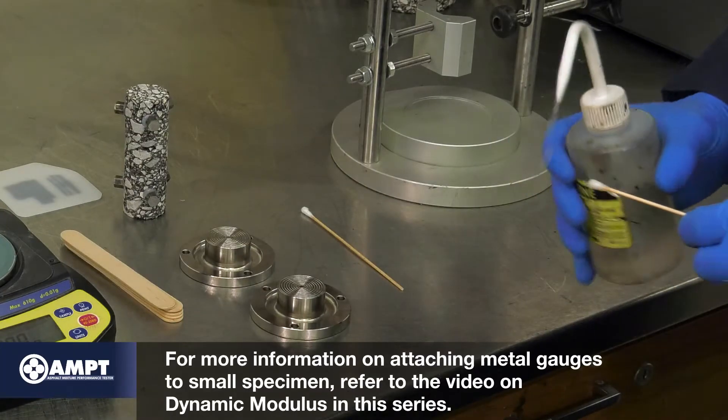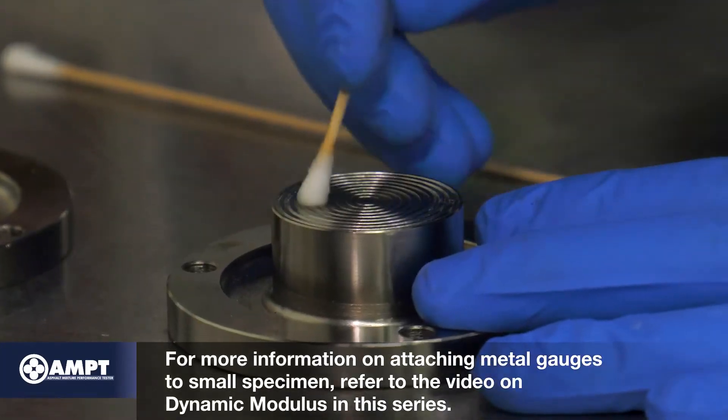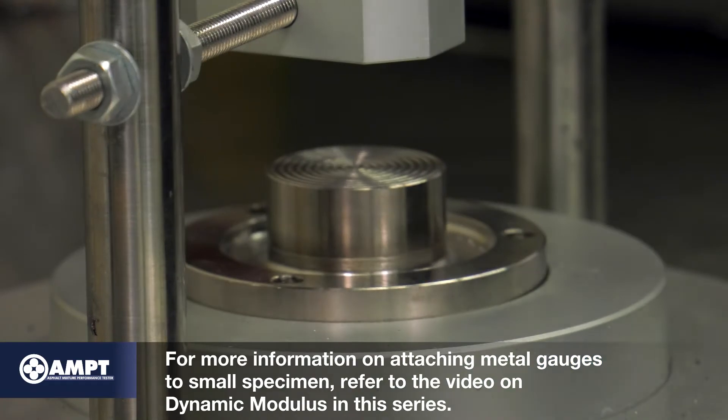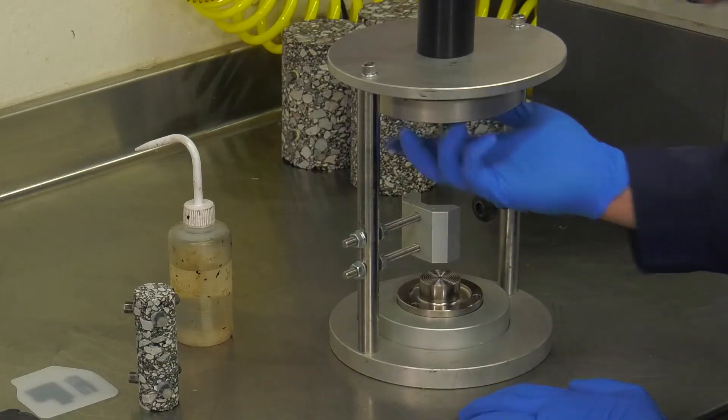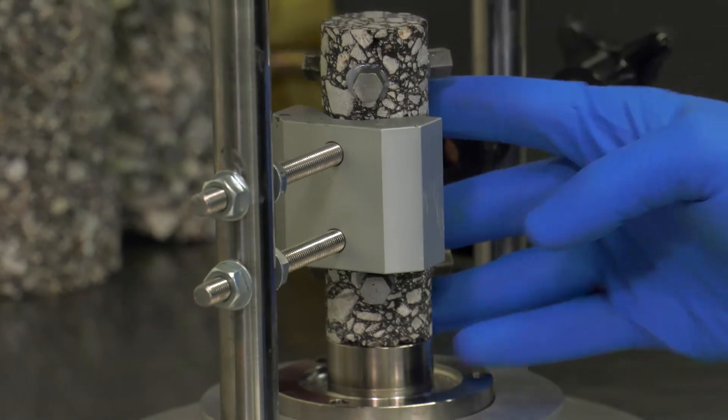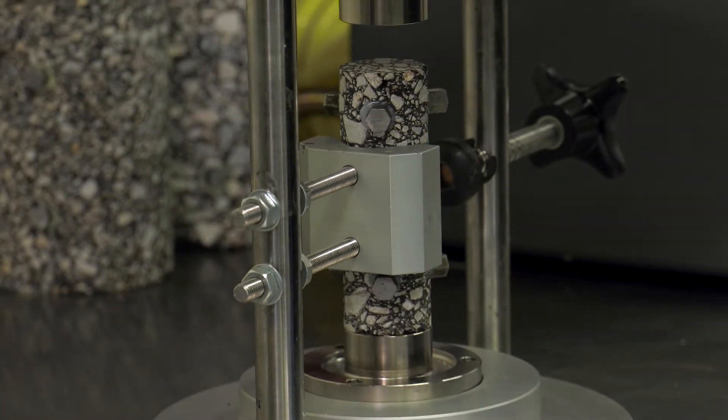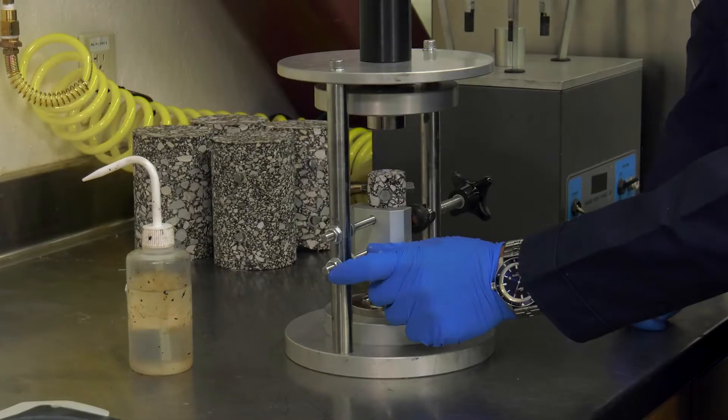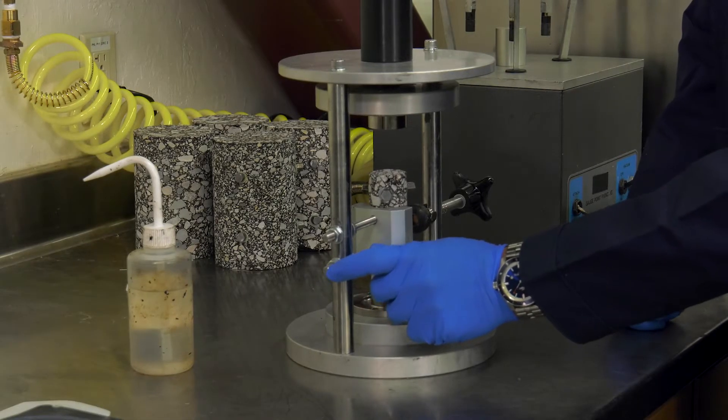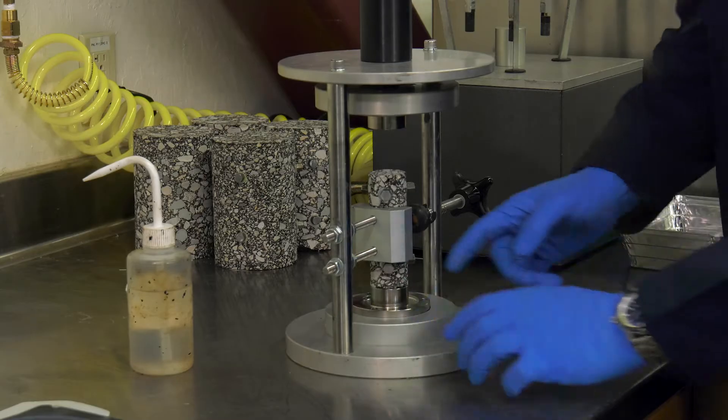Start by cleaning the contact surfaces of the two metal loading platens with acetone. Install the platens in the gluing jig, then place the specimen to check for eccentricity. If there is no eccentricity, remove the specimen and the platens and proceed with gluing. If you observe eccentricity, adjust the gluing jig and check again.